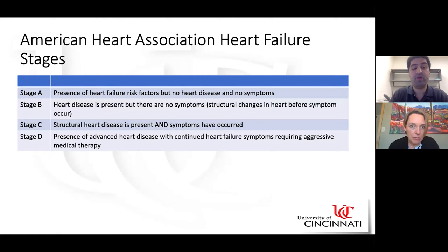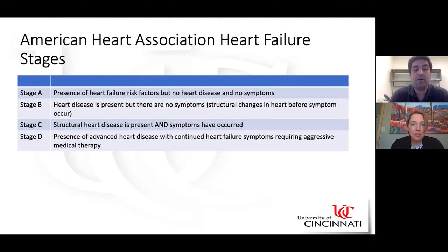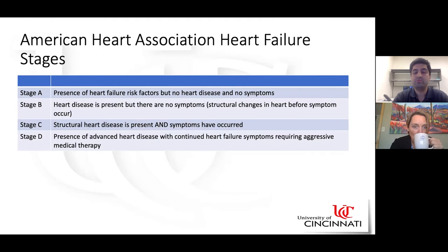The second classification system is the American Heart Association heart failure stages, A through D. Stage A: presence of heart failure risk factors, but no heart disease and no symptoms. Stage B: heart disease present, but no symptoms. Stage C: structural heart disease present and symptoms have occurred. Stage D: advanced heart disease with continued heart failure symptoms requiring goal-directed medical therapy. On the CVIC-B service, it's important to classify patients by these categories in your notes, as most patients will be NYHA class four and stage D.